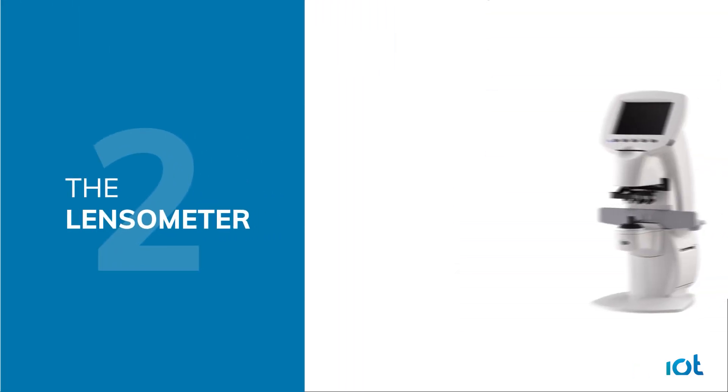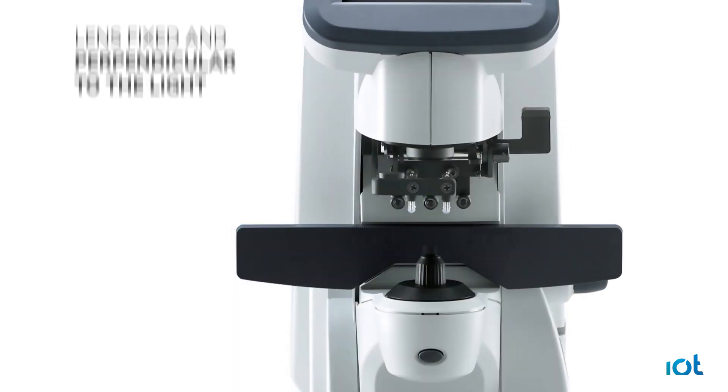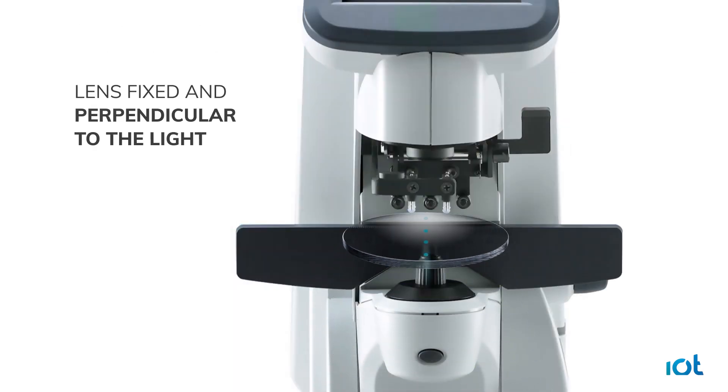A lensometer is used to measure lens power. The lens is fixed and perpendicular to the light beam of the system.